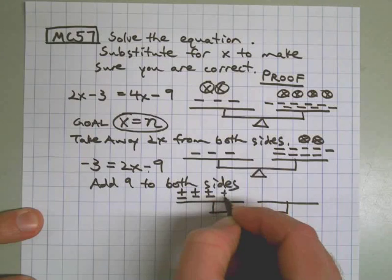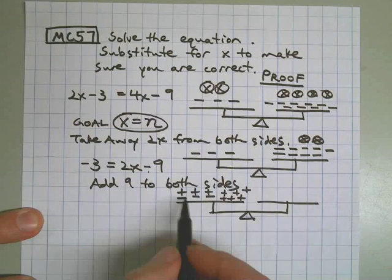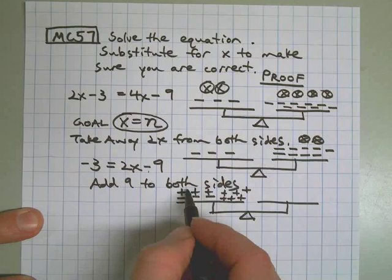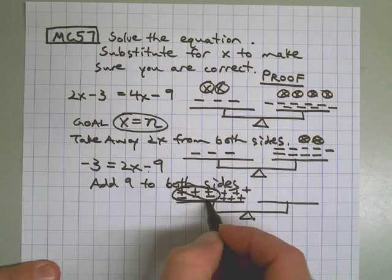if I add 9 to both sides, I still have my 3 negatives, but now I'm going to add 9. And these pairs here make 0. Those are 0 pairs, or a neutral field. That means that's 0.